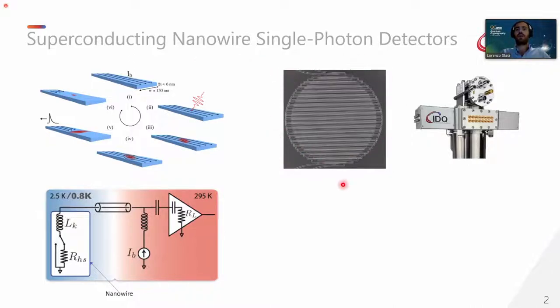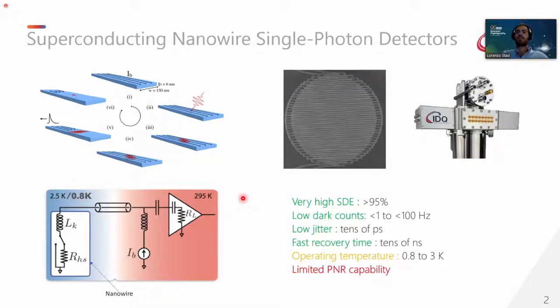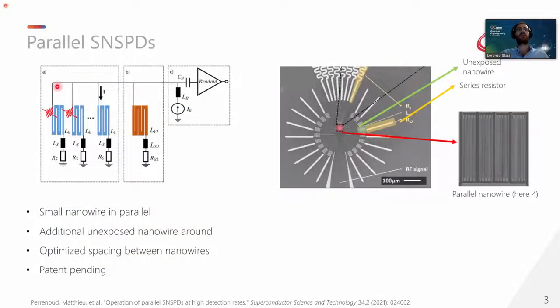One possible platform in which we can realize a PNR detector are the superconducting nanowire single photon detectors. SNSPD consists in a meandering nanowire, which is biased closely to the critical current. And when a photon arrives, it breaks some Cooper pairs forming a resistive region, which expands up to the cross section of the nanowire. And at this point, the current is redirected to the external circuit and we can detect the photon. SNSPD has been shown to achieve high efficiency, very low dark-count rate, super low jitter, and very fast recovery time in the order of nanoseconds. That can be operated at very nice operating cryogenic temperature, which reduces the complexity. But however, a single meandering SNSPD have a limited PNR capability. This is why we are trying to improve it by using the multi-array architecture that is based on parallel SNSPD.